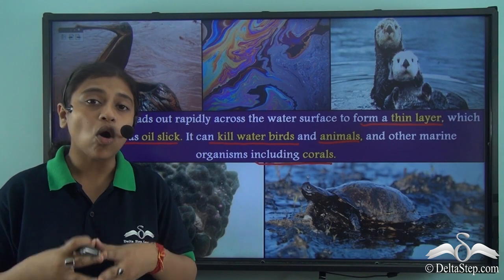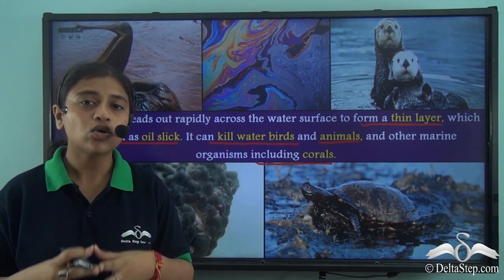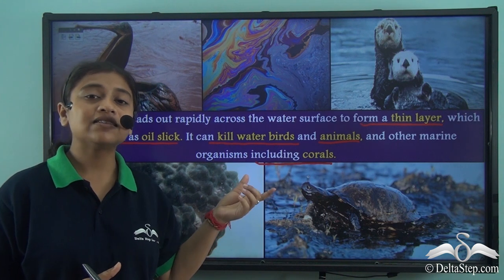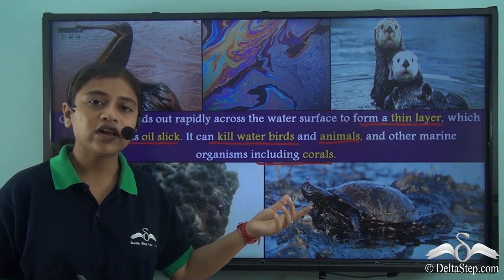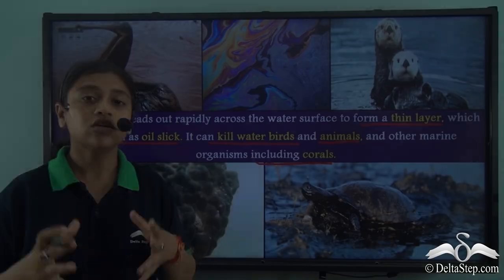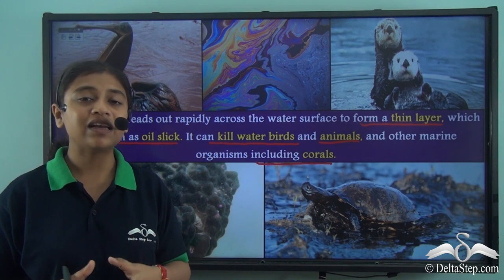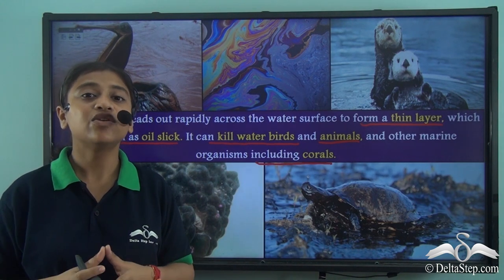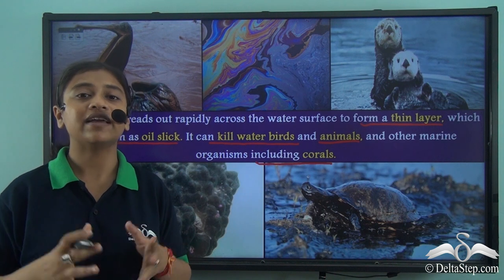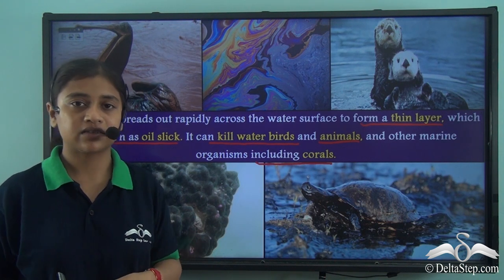The oil sometimes also reaches the sea bed or the ocean bed, affecting microorganisms like corals and thus destroying them. The consequences of an oil spill are many and these are usually very dangerous for the environment, particularly the marine environment.